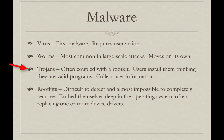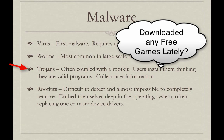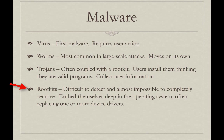Trojans are often coupled with rootkits, which we'll talk about here in a second. A Trojan is an application that looks like something you wanted to download. It actually has functionality you expected, but in the background it's doing things you really don't want it to do, like collecting user information and sending it back to an attacker.